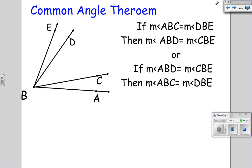Or the converse: if the measure of angle ABD equals the measure of angle CBE, then the measure of angle ABC will equal the measure of angle DBE.